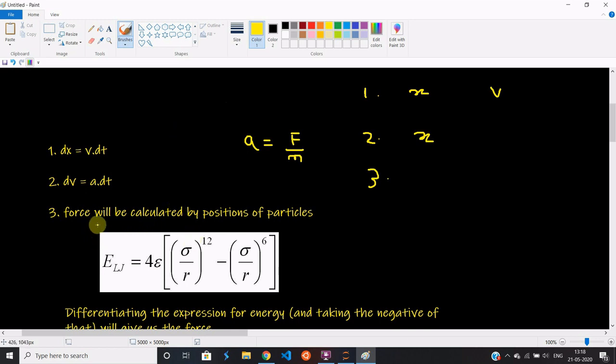The expression for the potential energy between two particles is this expression. It's called the Lennard-Jones potential energy. I'll tell you what epsilon and sigma mean in this expression. But obviously r is the distance between the two particles.